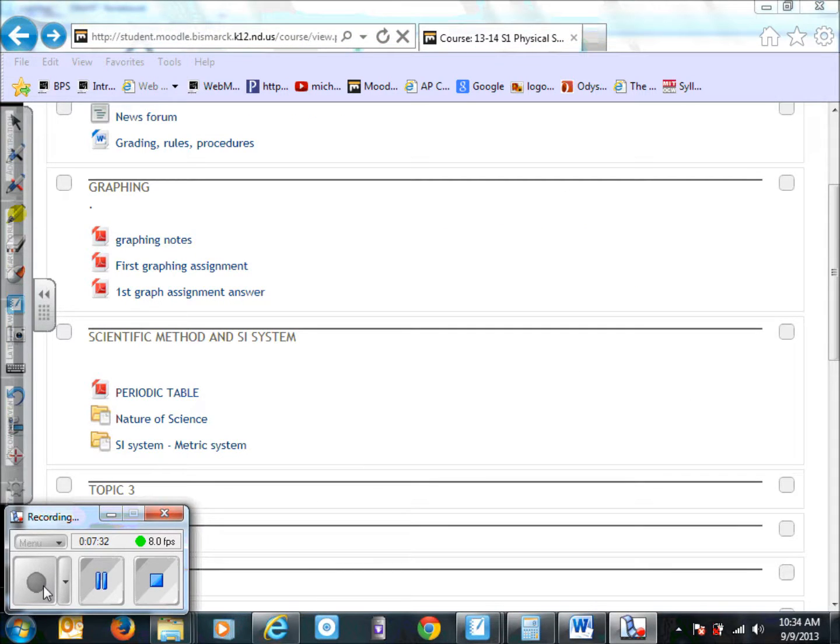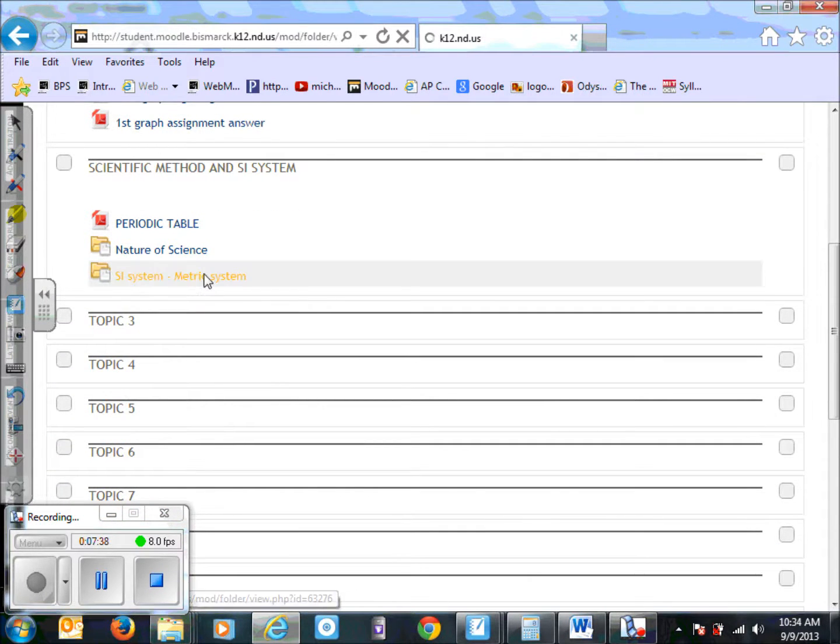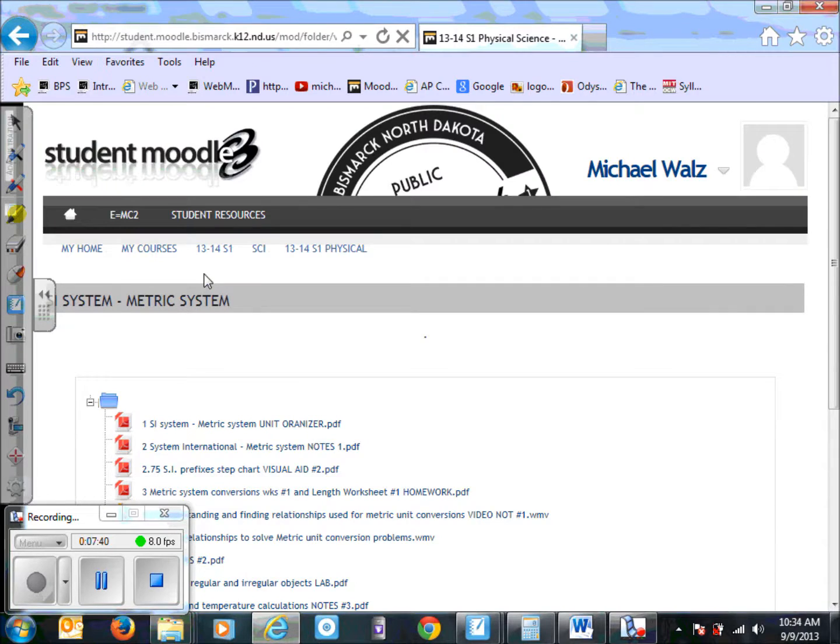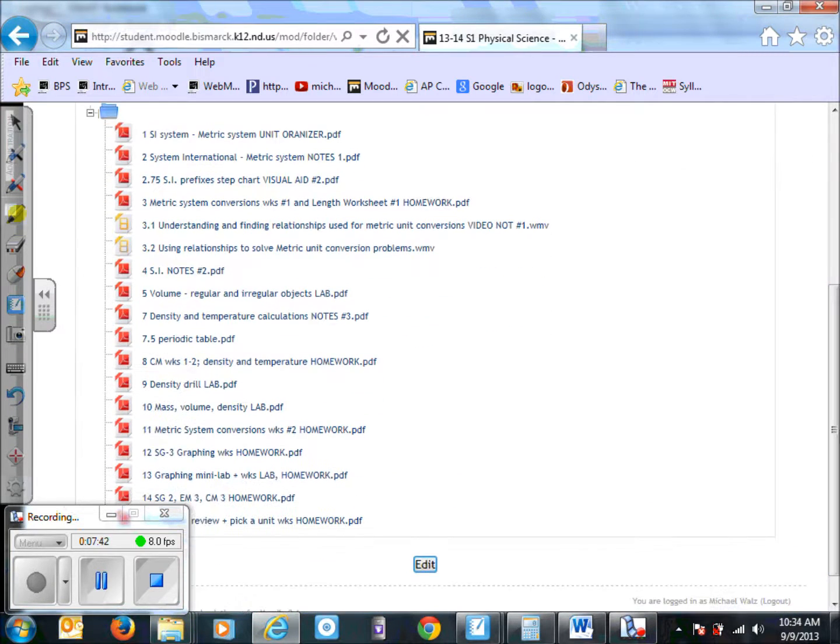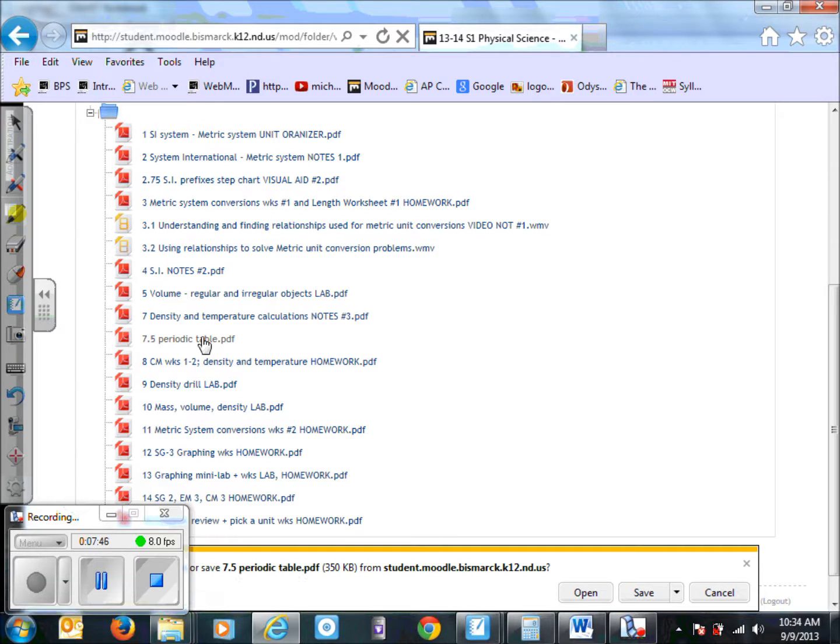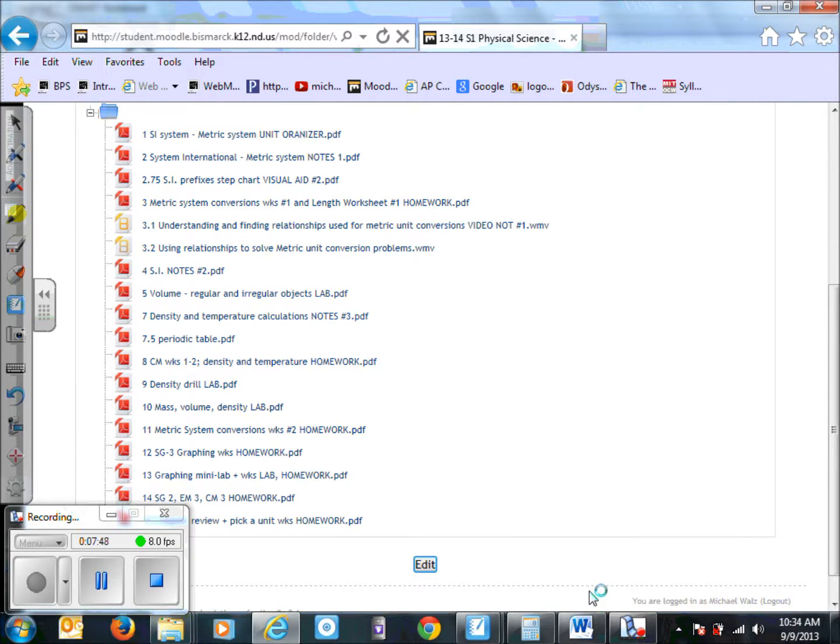You can either get to it from this front page, but inside the metric system folder here it opens up in a different page. We got 7.5 here, periodic table right in the middle, and I'll show you how to look at this here.